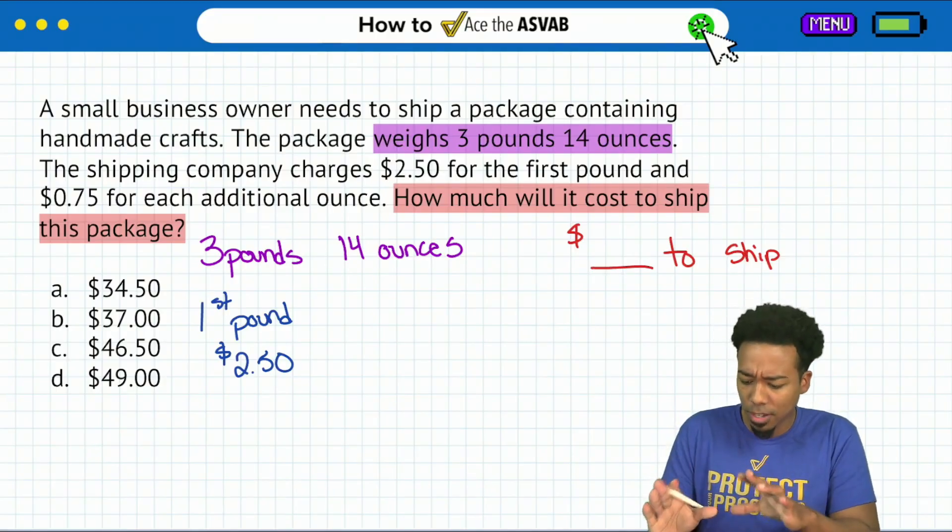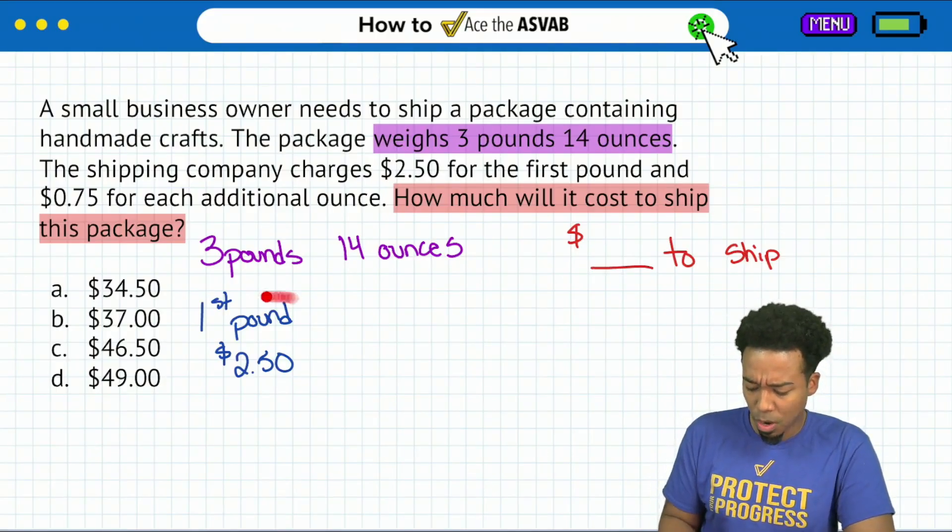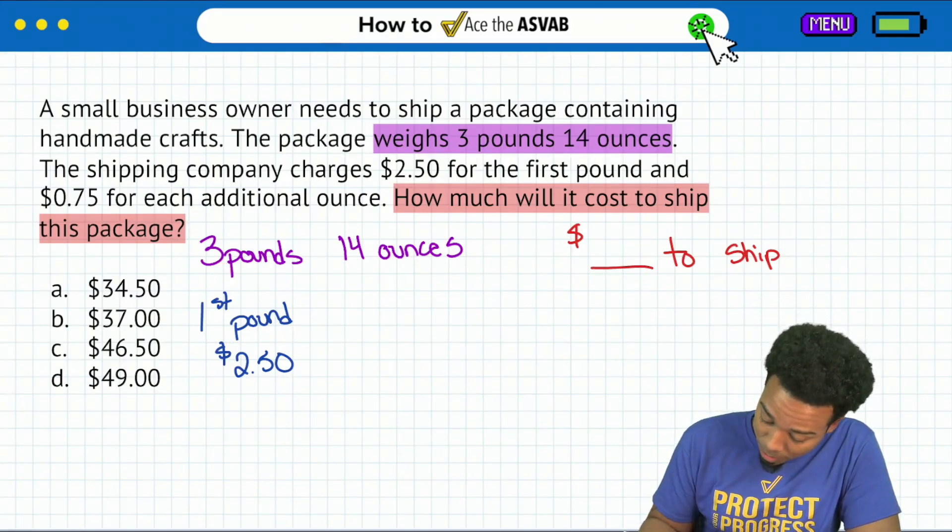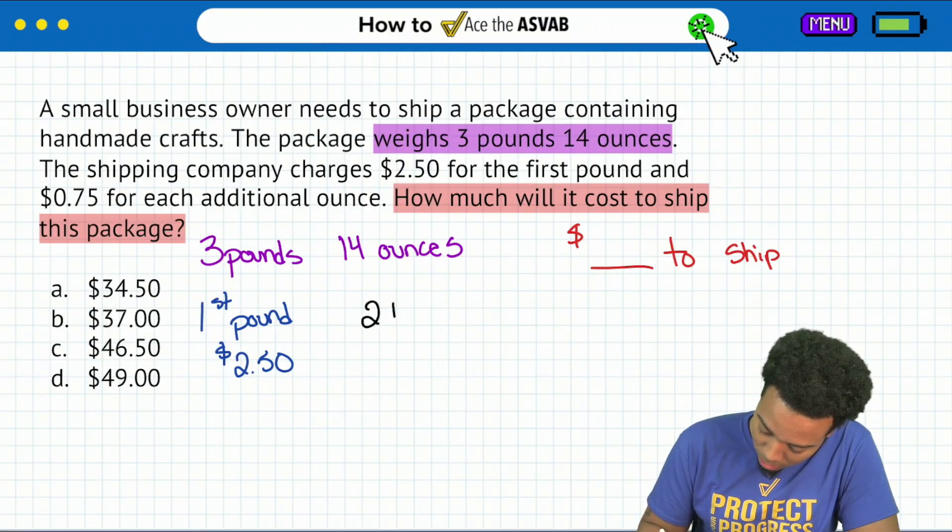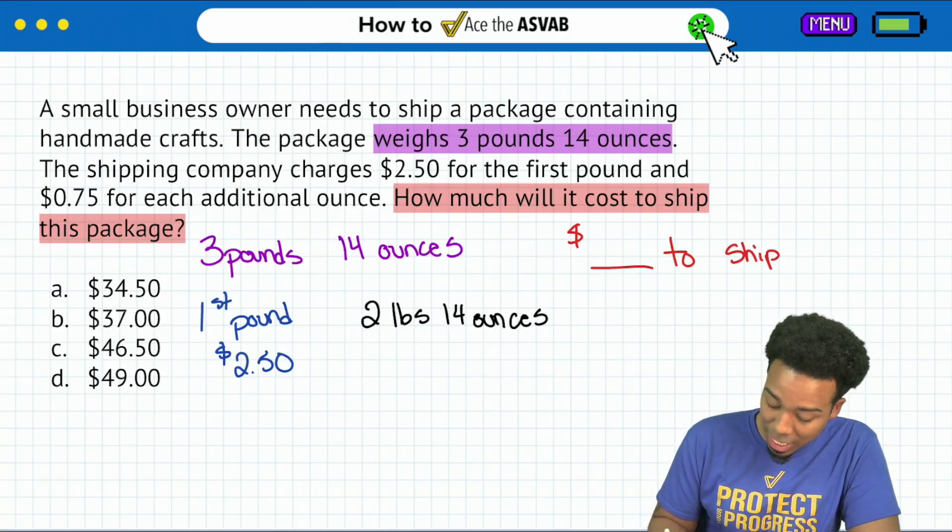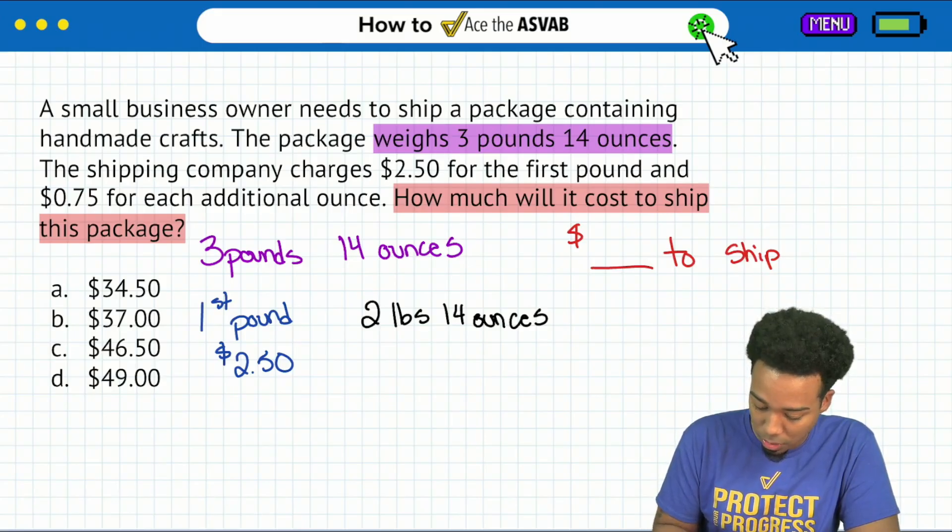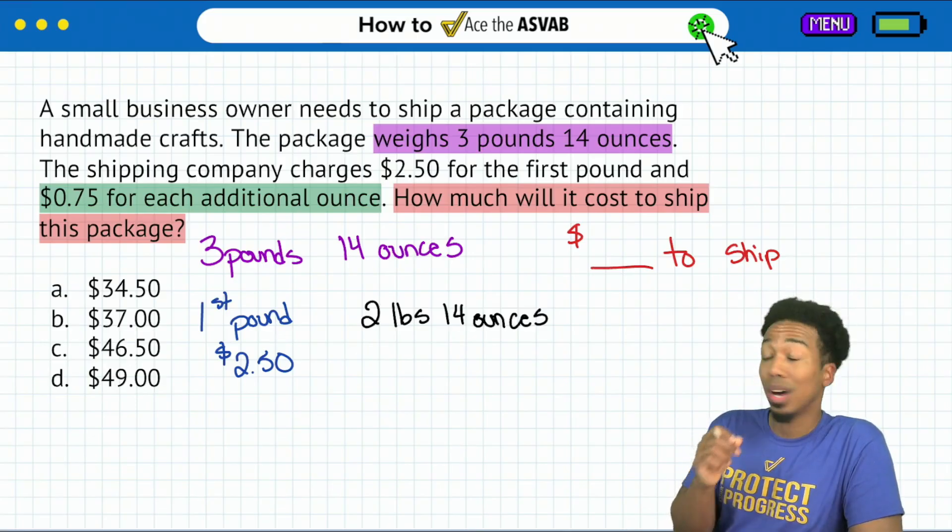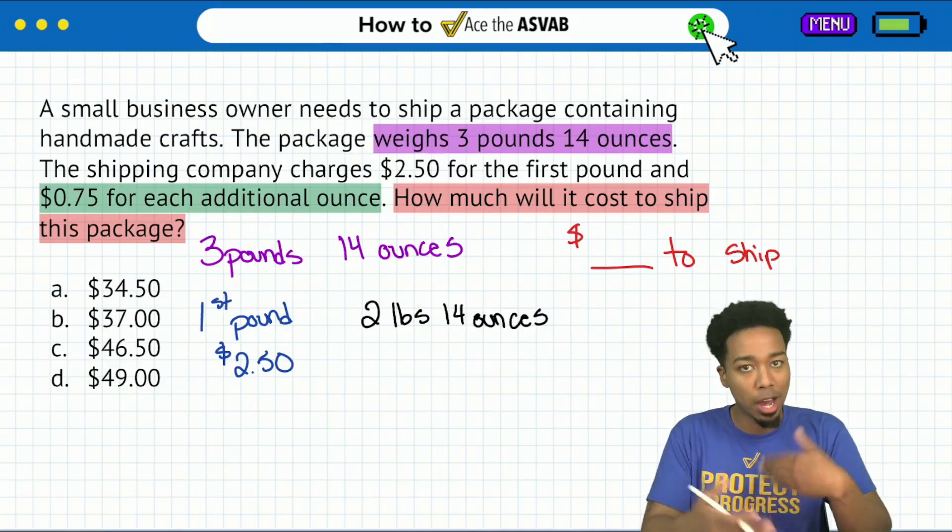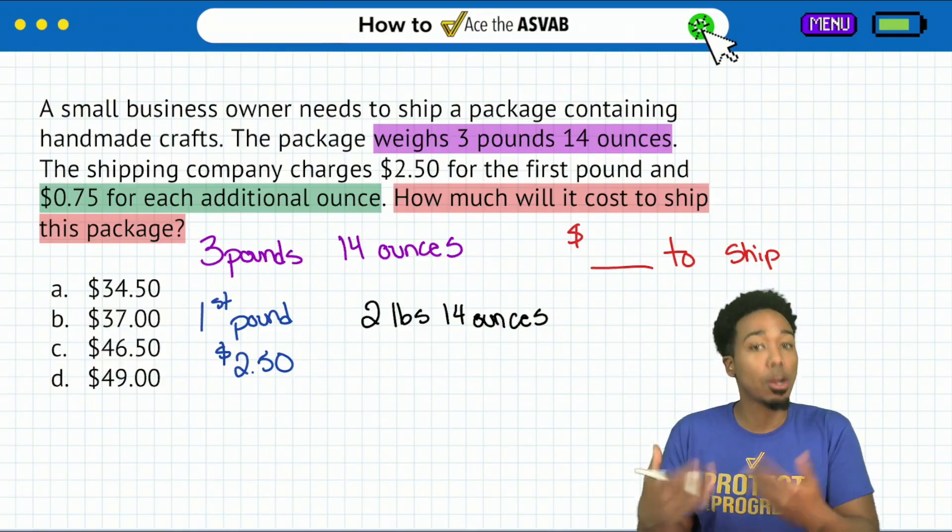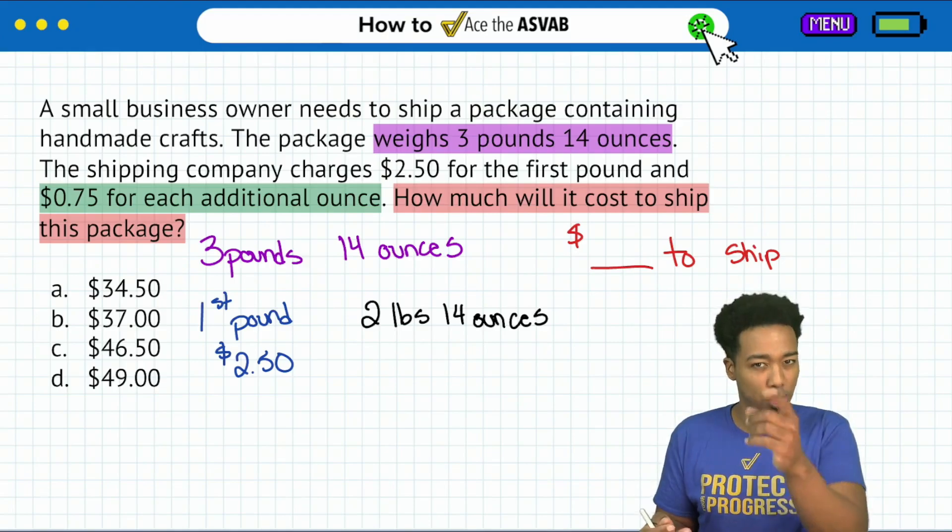So we'll have that right there, nice and easy. Booyah. And then up next, what we're going to say is, well, what does this mean here? The shipping company charges $2.50 for the first pound and then 75 cents for each additional ounce. Well, that's pretty clear there. What that means is, hey, your first pound right over here, that's going to be $2.50. That's the first pound. The remaining weight that we have, each ounce that we have over a pound, we're charging again, 75 cents for each additional ounce. So we need to understand how many extra ounces we actually have.